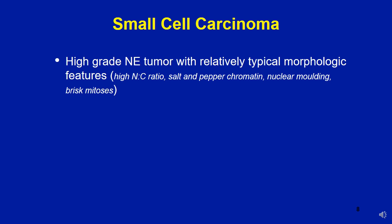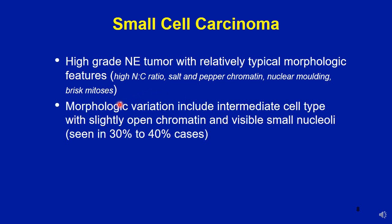Small cell neuroendocrine carcinoma is the most important clinically significant neuroendocrine prostate cancer. It is a high grade neuroendocrine tumor with morphologic features similar to oat cell lung carcinoma, characterized by high NC ratio, salt and pepper chromatin pattern, nuclear molding, and brisk mitotic activity. A morphologic variation includes an intermediate cell phenotype with slightly open chromatin and visible small nucleoli, seen in 30 to 40 percent of cases.